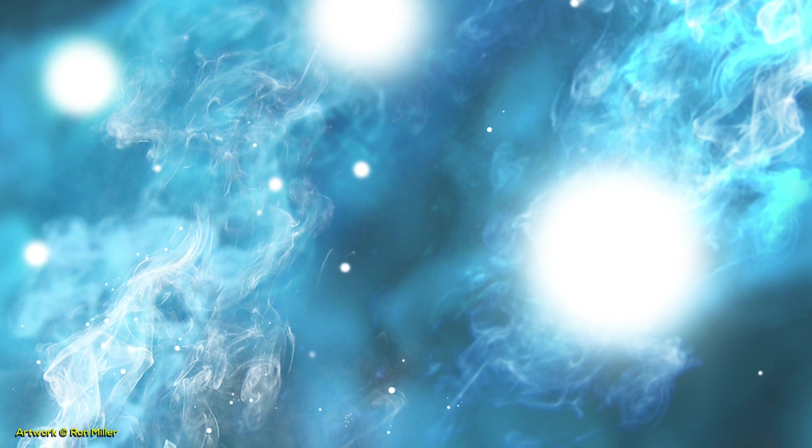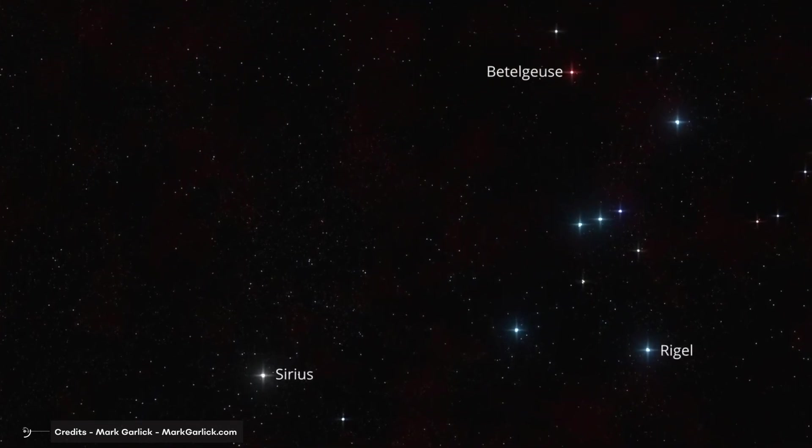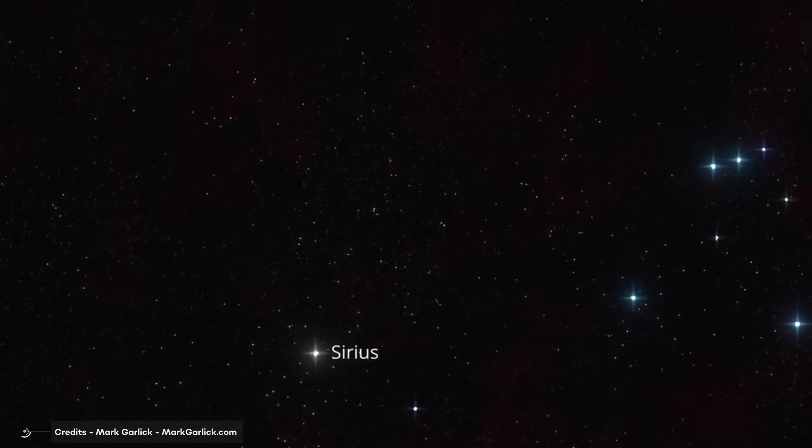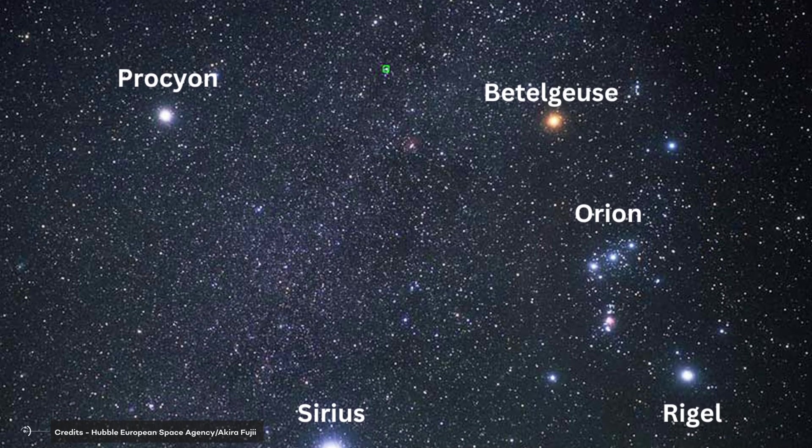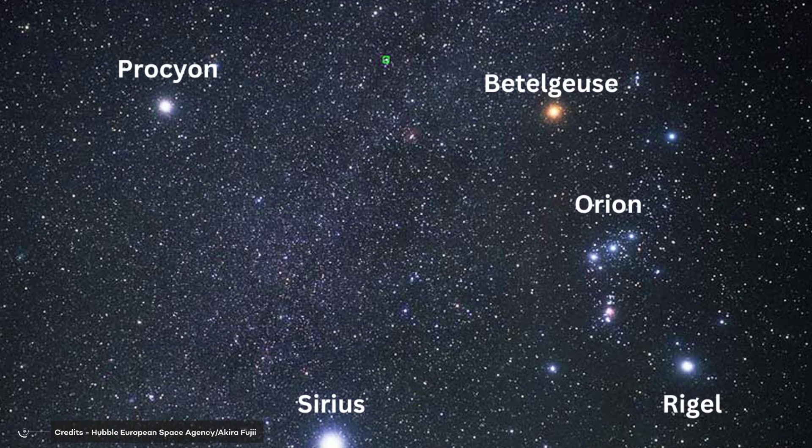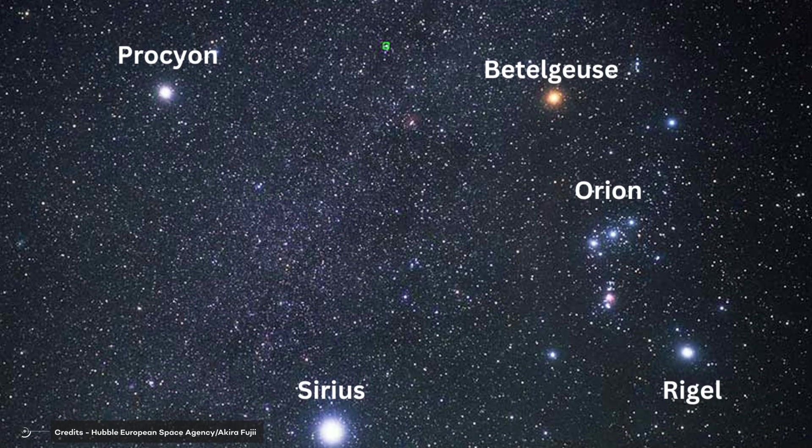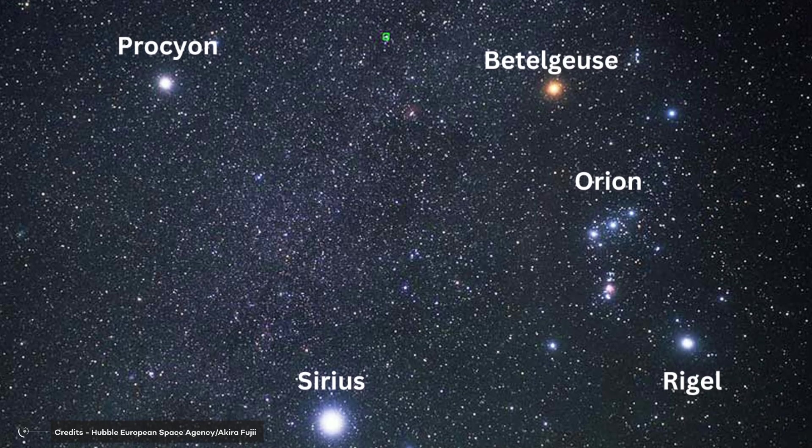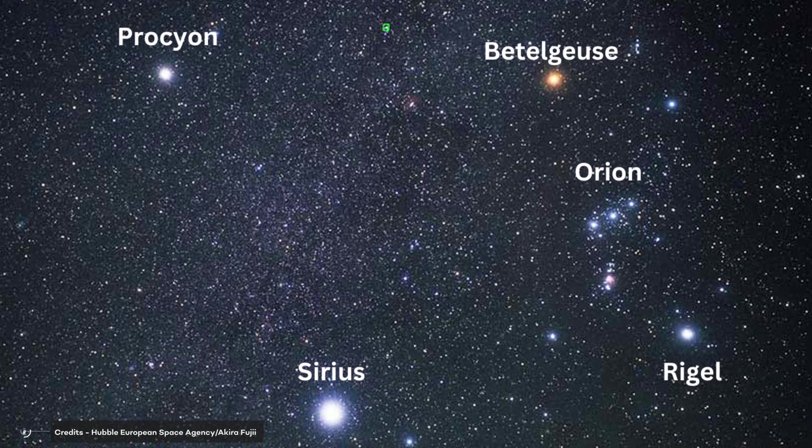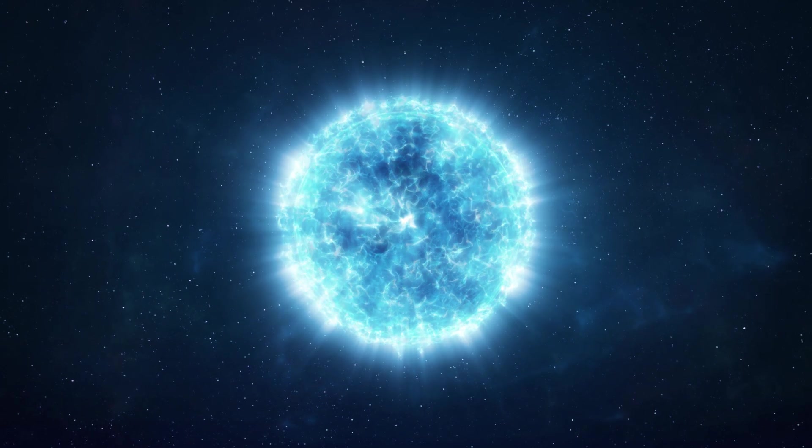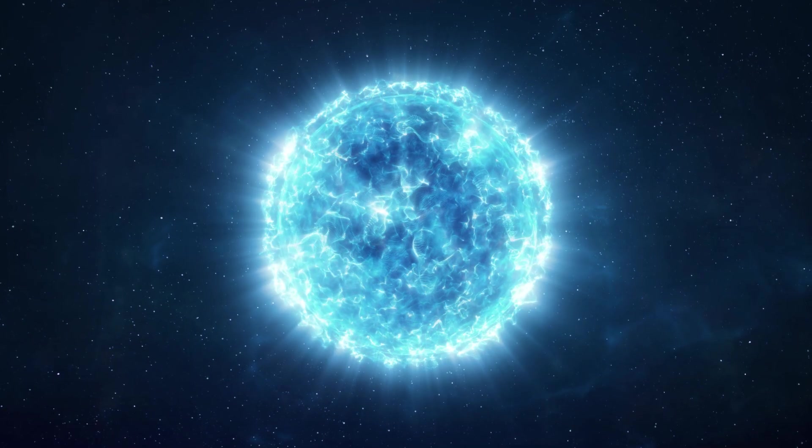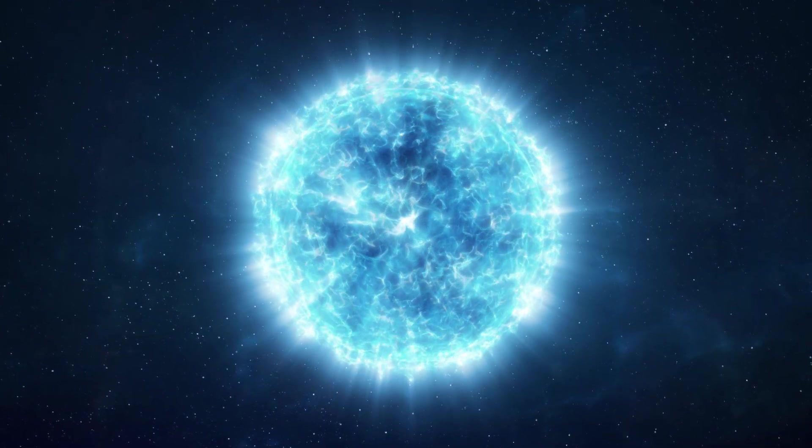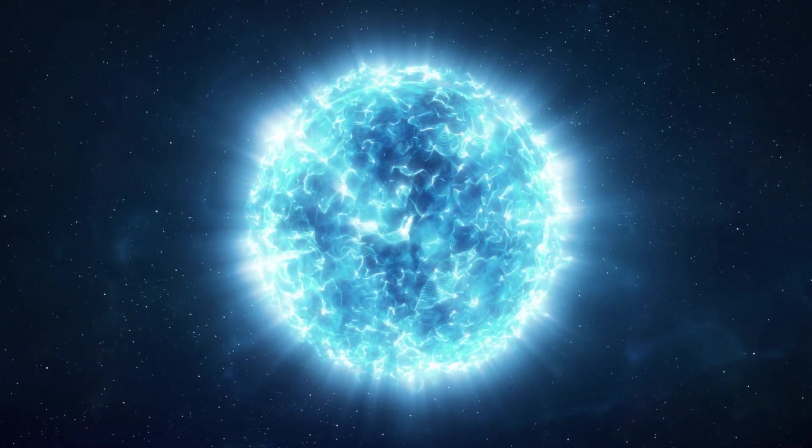Despite its dazzling brightness, Rigel is not the brightest star in the night sky. That honor belongs to Sirius, which is located in the constellation Canis Major. Sirius is estimated to be about twice as bright as Rigel, making it the most luminous star to be visible in the night sky. In comparison to other stars in the universe, Rigel is still incredibly bright. It is estimated to be thousands of times brighter than most stars, placing it among the top 10 brightest stars in the night sky. This makes it an ideal star to look out for when viewing the night sky.